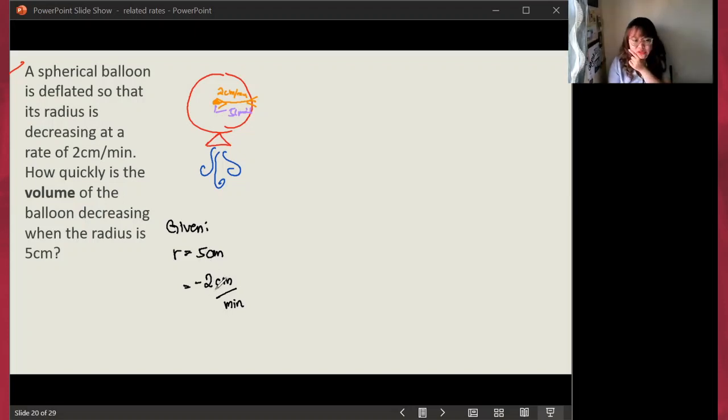Next, negative 2 centimeters per minute. Let's think of the appropriate notation for this. Negative 2 describes how your radius is changing. Therefore, what should be our numerator here? If radius is denoted by r, then the change in radius would now be denoted as dr. And then, it is in terms of time. Therefore, we have dt here.